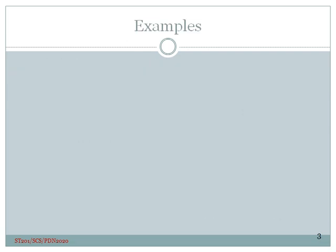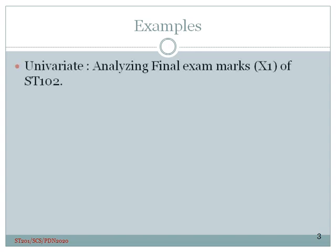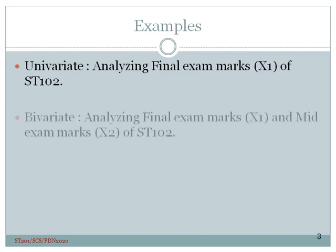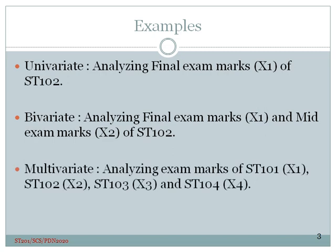Let me explain this using an example. Consider the set of students who follow statistics as a major subject at this university. If we are only interested in the exam scores of ST102, it's a univariate situation. If we want to analyze final exam marks and mid-exam marks of ST102, it's the bivariate situation. If we want to analyze all four courses offered for statistics major students in the first year, that is ST101, ST102, ST103 and ST104, now there are four variables, x1, x2, x3 and x4. That becomes a multivariate situation.